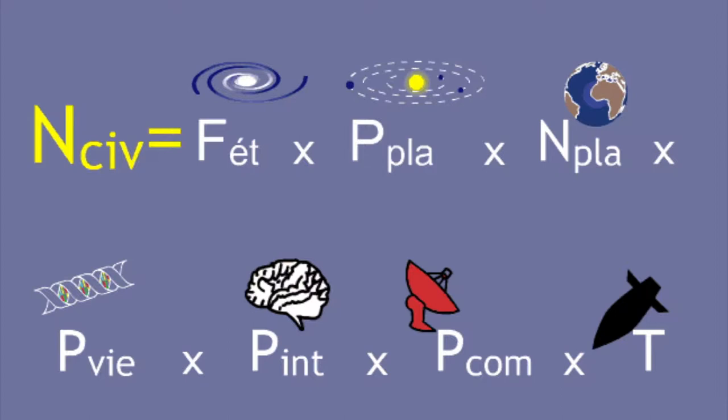Notice those modifiers. We're looking for intelligence, we're looking for technology and the ability to communicate, and we're looking for some contemporaneous existence where they exist with us such that we can communicate. Notice also, we're only talking about the Milky Way. Logically, whatever the number N is, we must multiply it by 100 billion for the number of intelligent communicable civilizations in the universe. But we assume that those are mostly at distances far too far to even imagine communication.